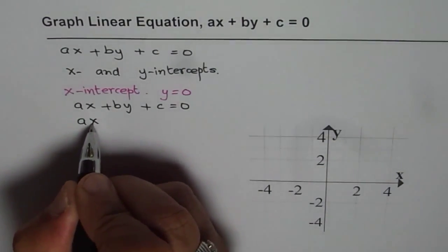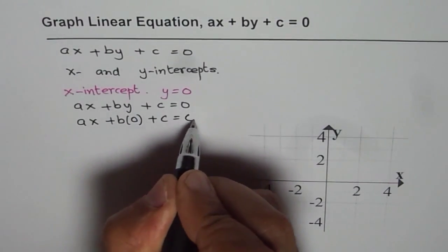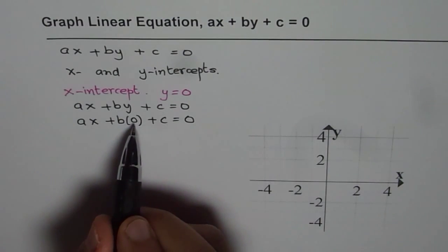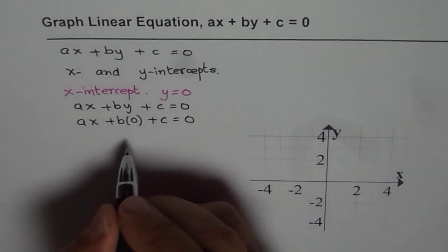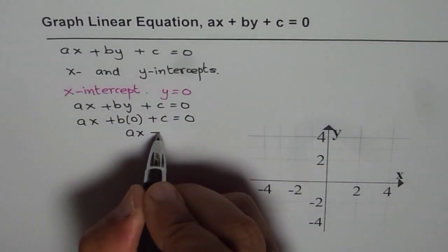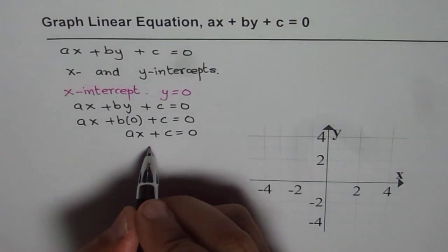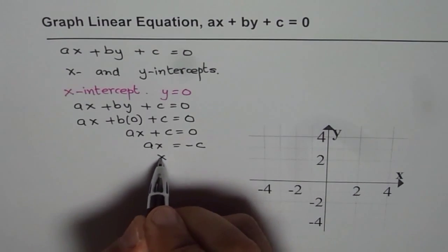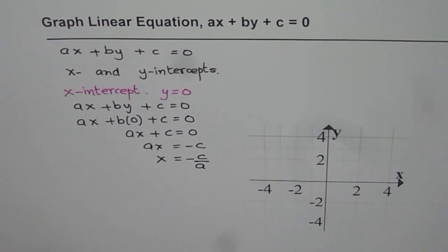A times X plus B times 0 plus C equals to 0. Since Y is 0, B times 0 is going to be 0. So we are left with AX plus C equals to 0, which can be written as AX equals to minus C. Dividing by A, we get X equals to minus C over A. So that gives you the value of the X intercept.